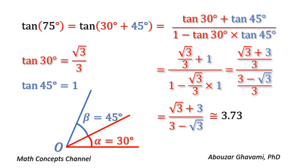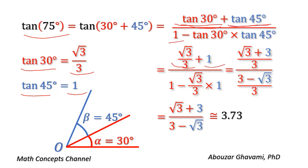Tangent of 30 degrees equals square root of 3 divided by 3. Tangent of 45 degrees equals 1. Thus tangent of 75 degrees equals square root of 3 divided by 3 plus 1, all divided by 1 minus square root of 3 divided by 3 times 1.